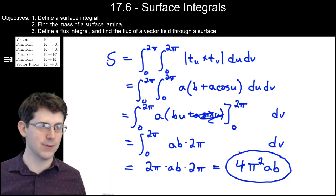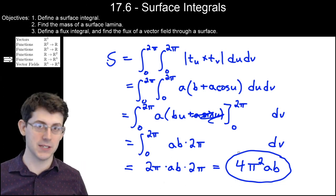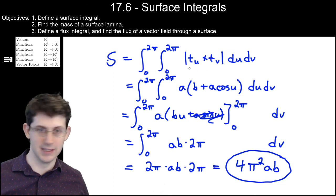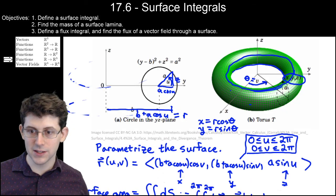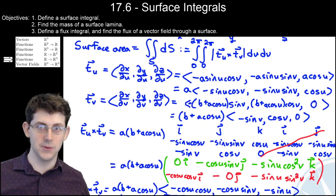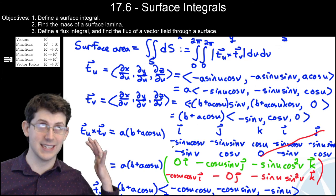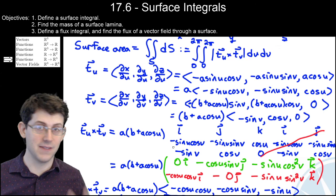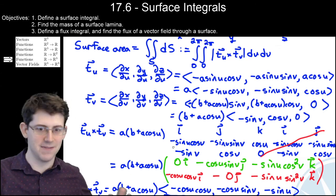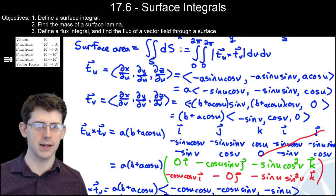That was a crazy calculation, but the key takeaways are: T_u is the u partial derivative of the parameterization, T_v is the v partial derivative, then you do a cross product to get the scaling factor |T_u × T_v|. Even more important: if you're working with vectors, factor scalars out of them so you don't have to deal with the crazy scalars repeatedly. Don't just accept vectors as they are — factor scalars out so the cross product computation stays manageable.